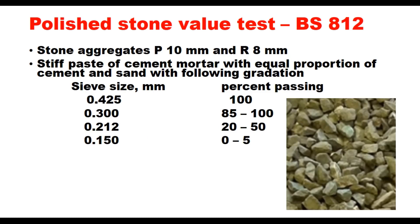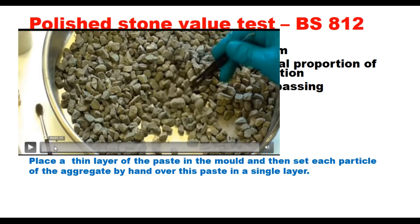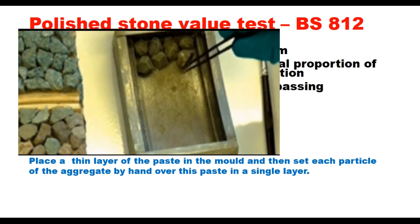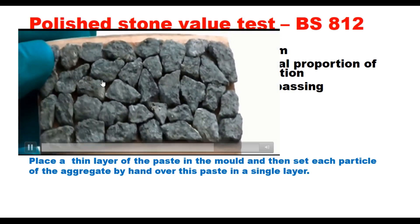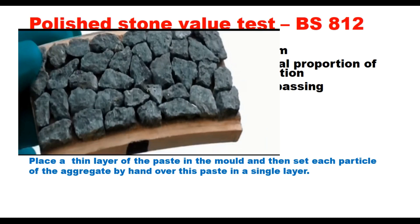The aggregate used for making the specimen is of size passing 10 mm and retained on 8 mm — a single-size aggregate. You need a paste of cement and sand, and the sand should have the specified gradation. Place a thin layer of paste in the mould, then place each aggregate particle by hand over this paste in a single layer. The particle should be flat at the bottom — not flaky or elongated. The space between the particles is filled with sand. Alternatively, you can use an adhesive like Araldite in the mould to place the aggregate.